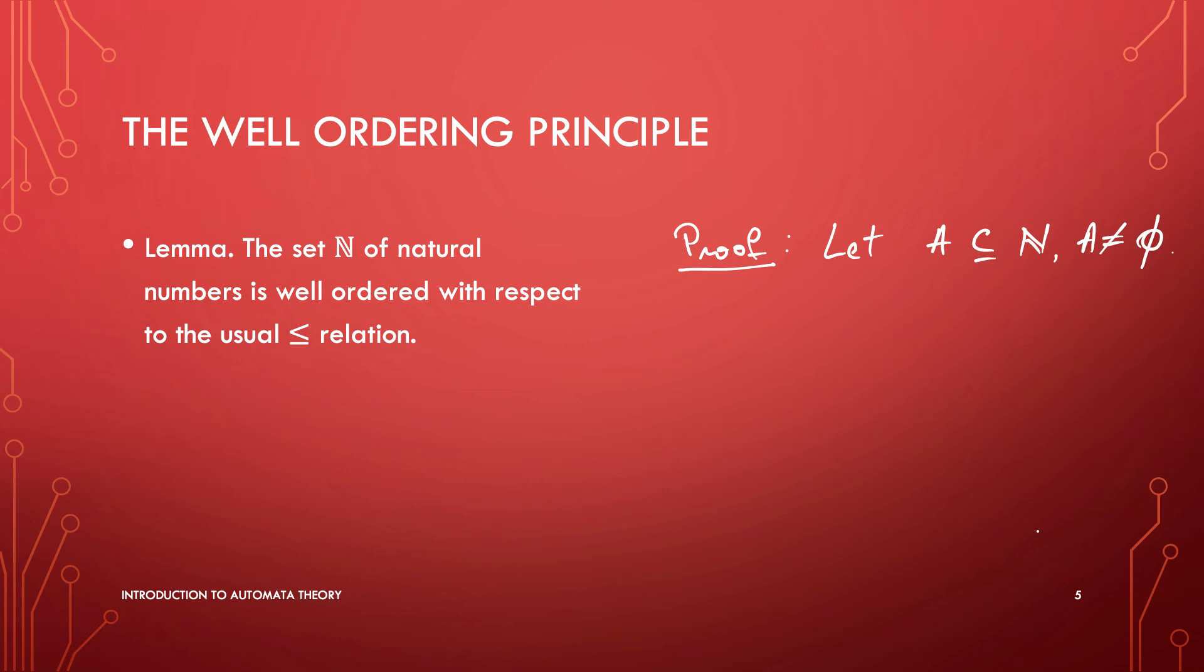The way we are going to show that it has a least element is like this: we check if 0 is in A (maybe it is, maybe it's not), then we check if 1 is in A, then we check whether 2 is in A, and so on.